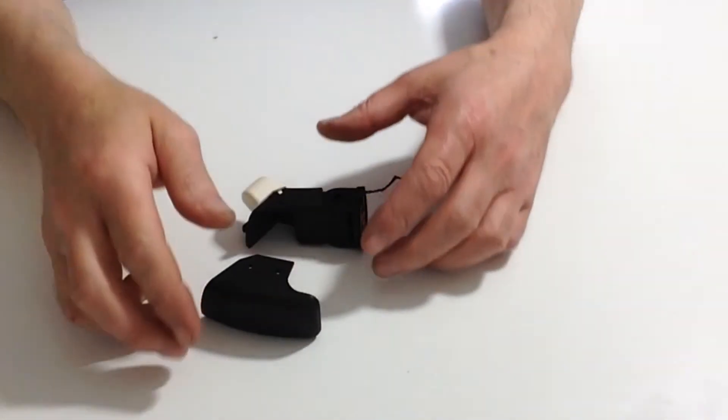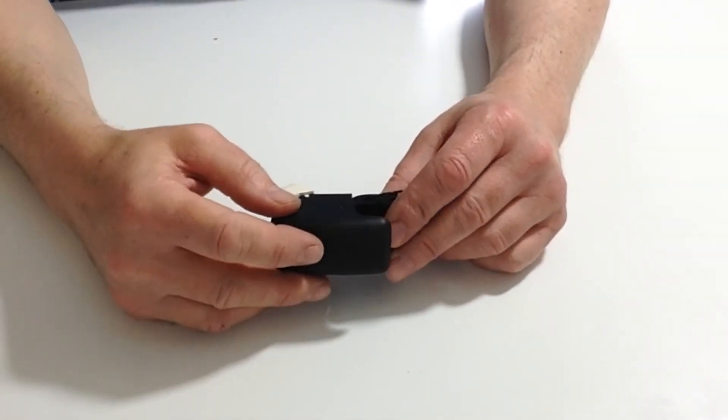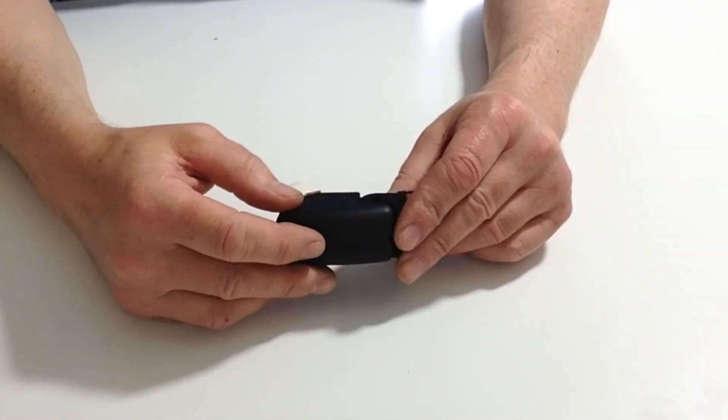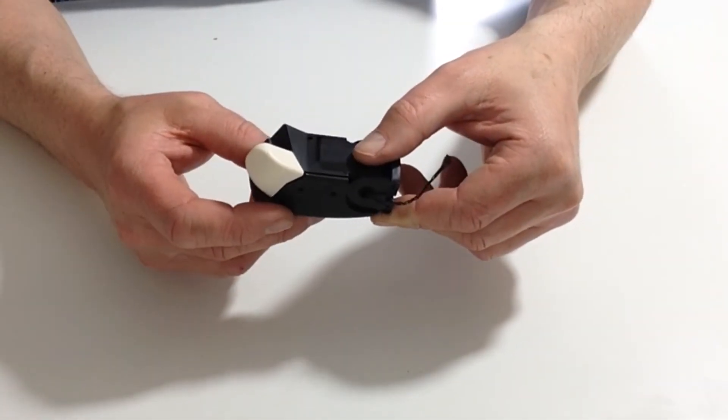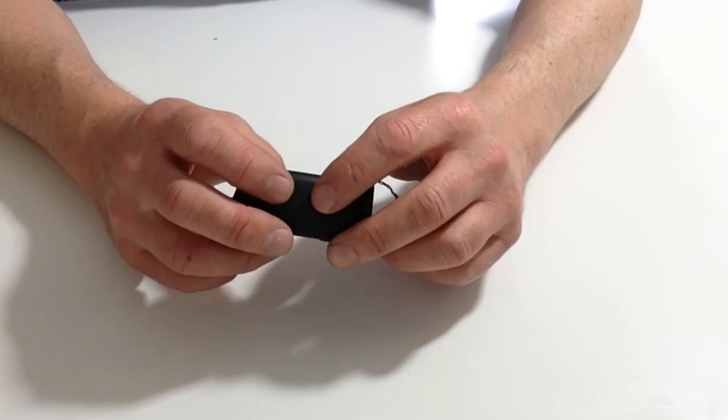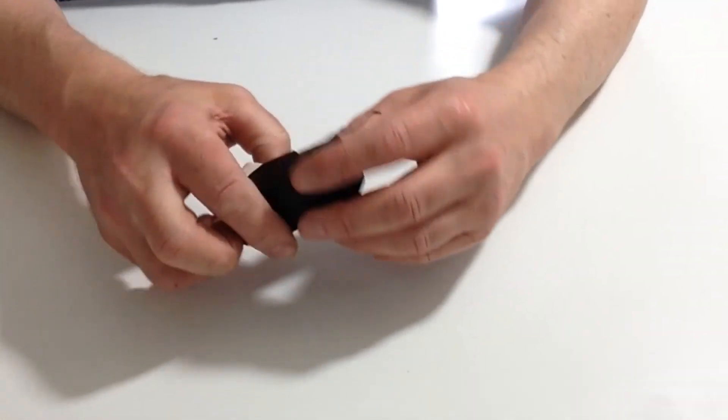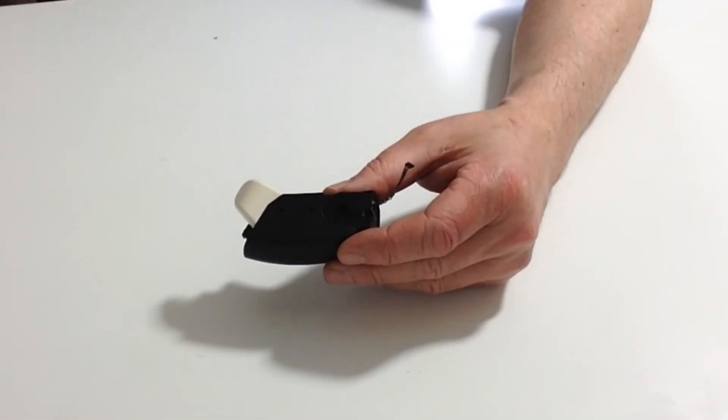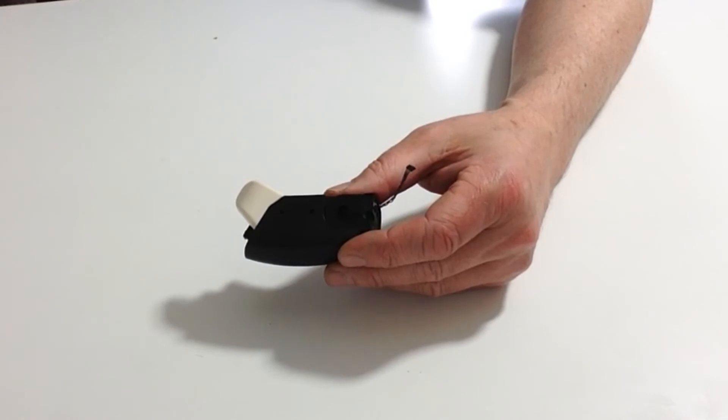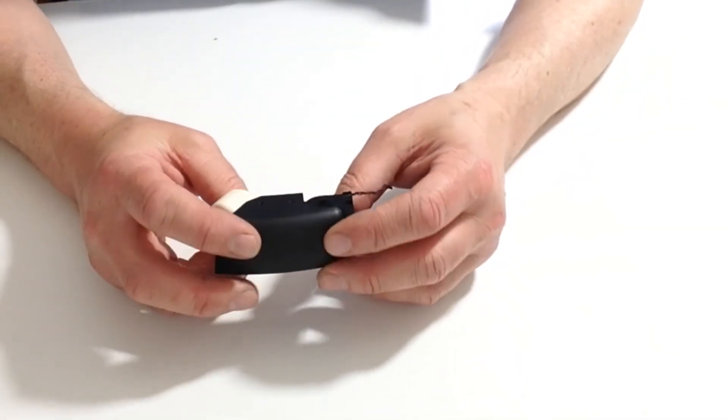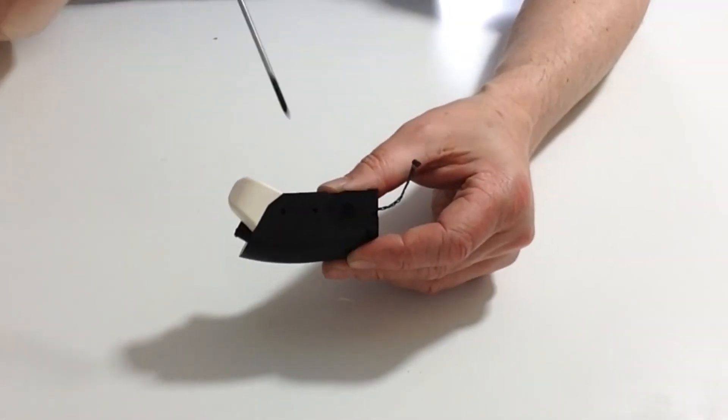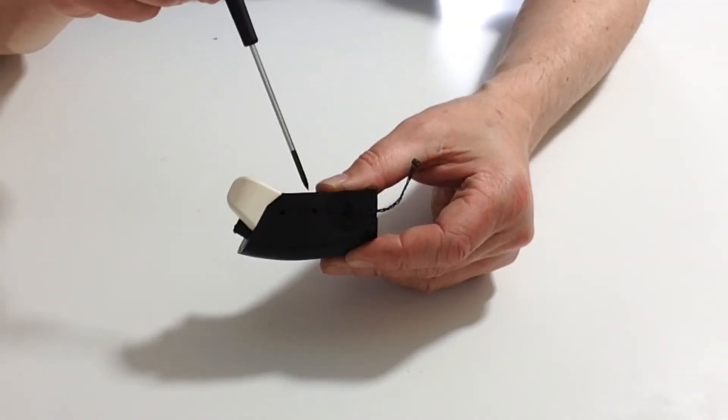Once you've done that, take the right forearm and place it over the assembly that we've just done. Once you're happy with that fit, you need to fit two 6mm countersunk screws - they go here and here, right beside Robbie's thumb.